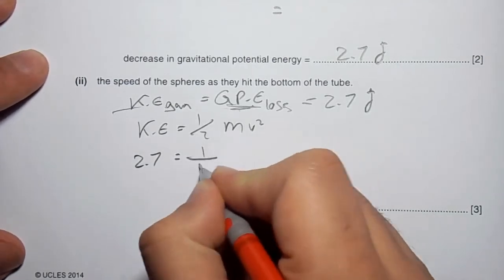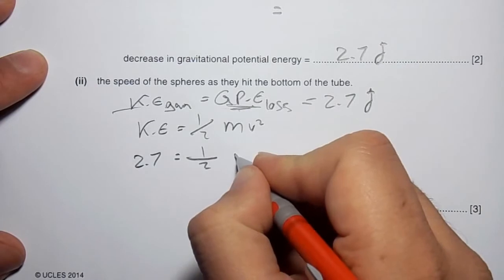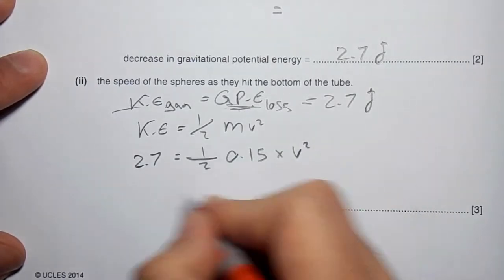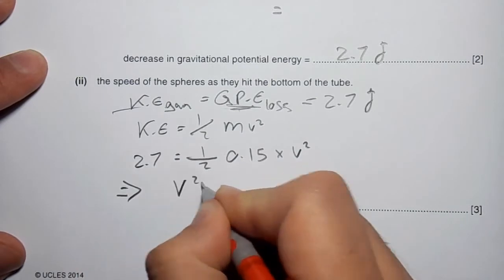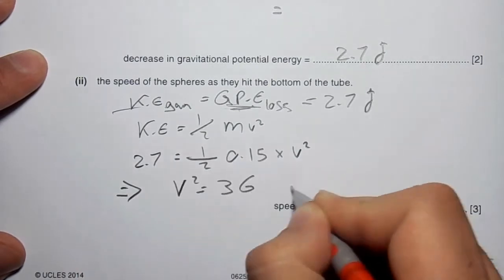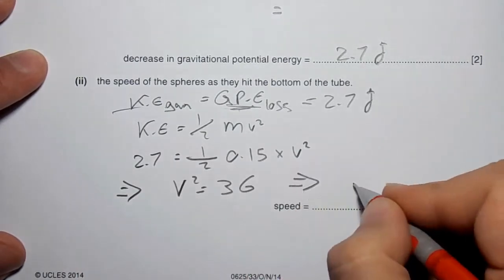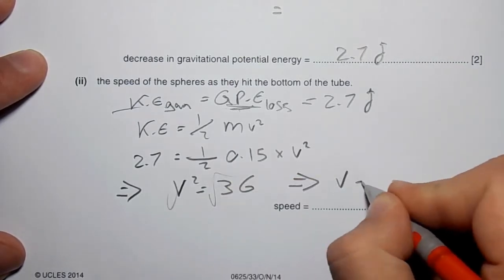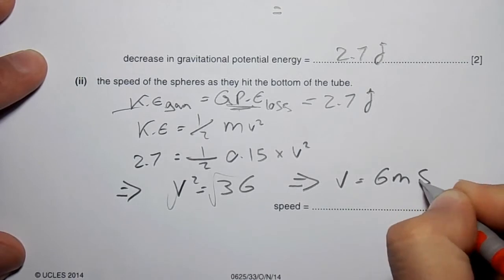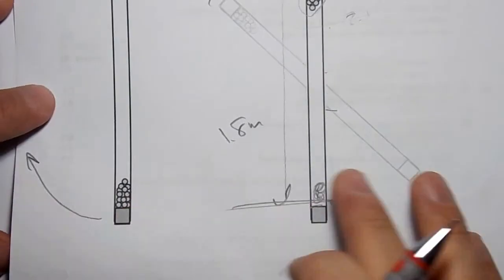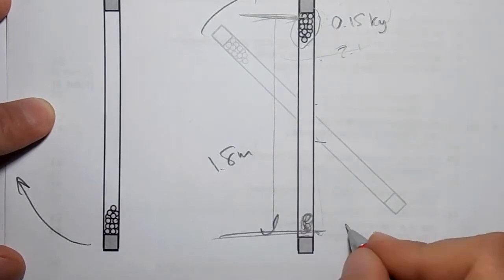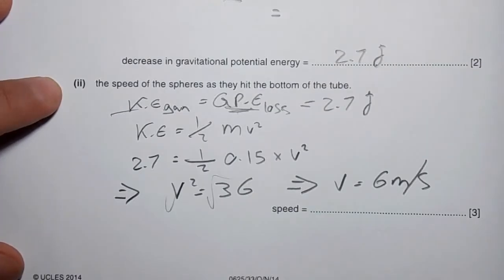The kinetic energy at the bottom as it hits equals half times the mass 0.15 times v squared. If you calculate this, v squared equals 36. Take the root of both sides and the speed is 6 meters per second. So when this sphere falls and hits the ground, it hits at 6 meters per second.